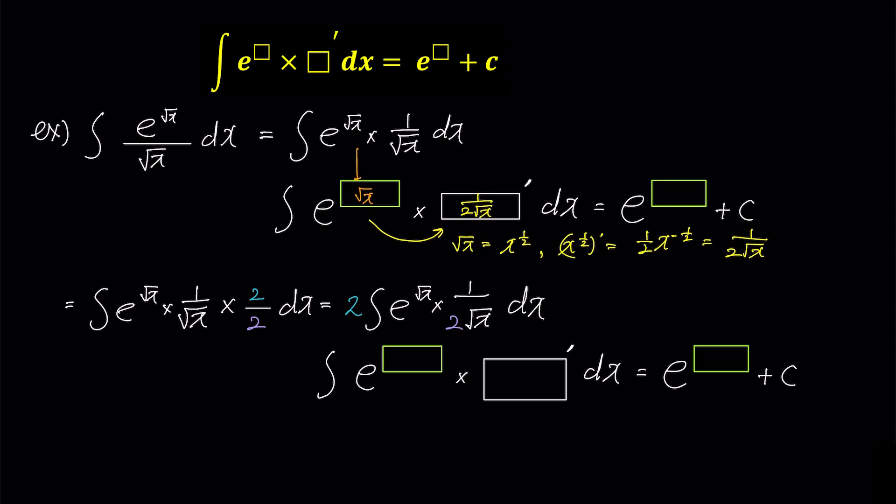Now, it's time to whip out the box rule once again. 1 multiplied by 2 up front, put square root x in the box, and 1 over 2 times square root x in the box prime. And don't forget to multiply the right-hand answer by 2 and put square root x in the green box. Voila, another problem solved with the power of the box rule.